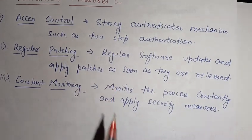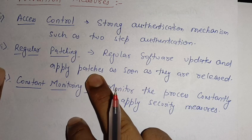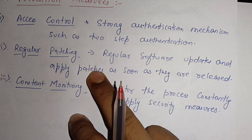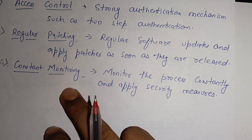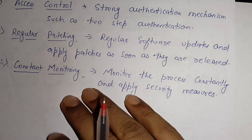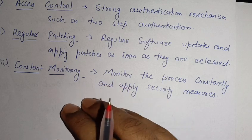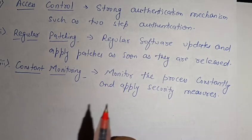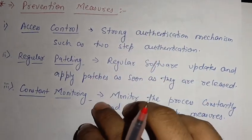The second prevention measure is regular patching — we should update our systems and software regularly and apply patches as soon as they are released. The third is constant monitoring — we need to monitor processes constantly and apply security measures. If any suspicious or vulnerable activity is happening in the system, we can detect and rectify it early.